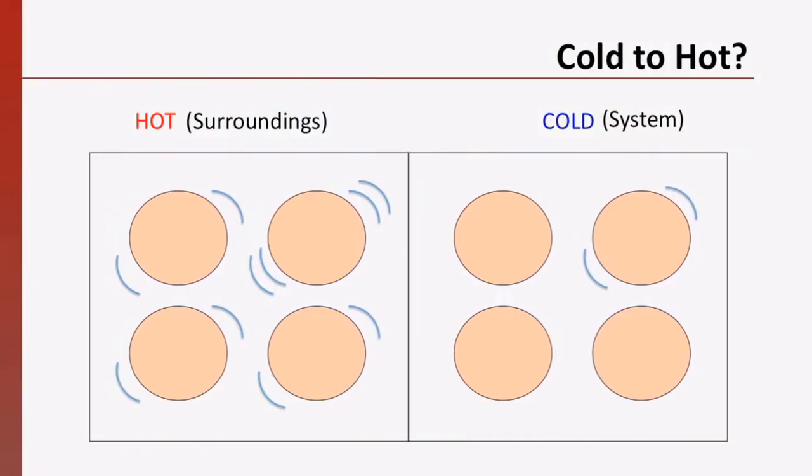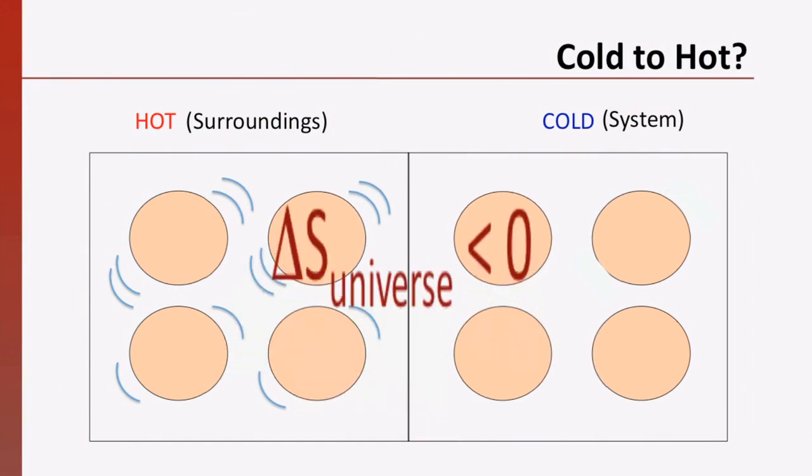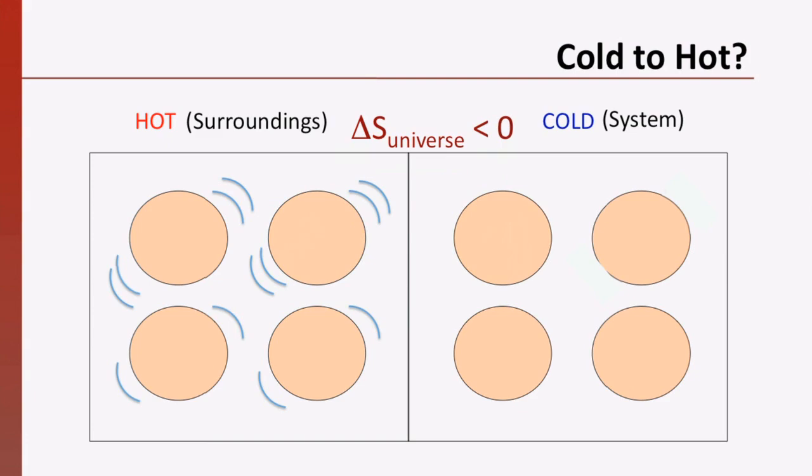If you did a similar calculation for the reverse process, that of heat transferred from the cold bar to the hot bar, the total entropy change would be negative, indicating that it is not spontaneous. As we hinted earlier, and as you may have guessed by our very simplified scenario, calculating the number of microstates in a real system can be very challenging.